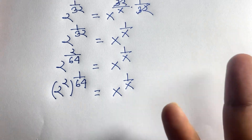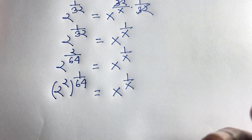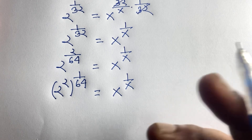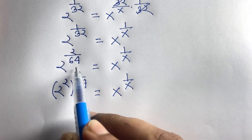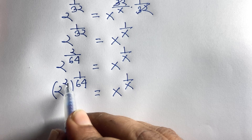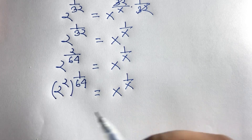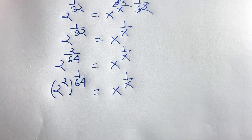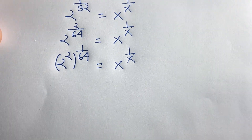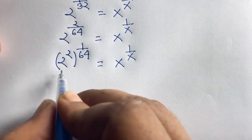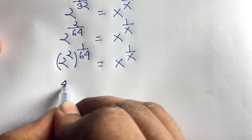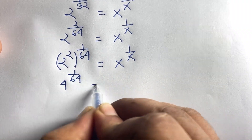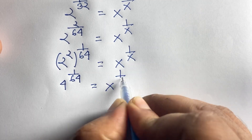According to exponential rules, a to the power n, whole to the power m, is equal to a to the power nm. Applying these rules: 2 to the power 2 over 64 becomes 2 to the power 2, whole to the power 1 over 64. Now 2 to the power 2 is 4, so we have 4 to the power 1 over 64 is equal to x to the power 1 over x.